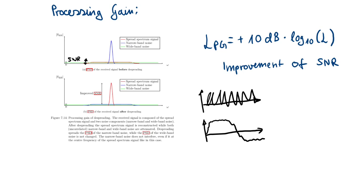Analogous to the downsampling we learned in the last chapter, we can give a formula for the processing gain, and it looks very similar to the processing gain achieved by downsampling. But here we use the spreading factor instead of the decimation factor. Like downsampling, the spreading factor is the ratio of the chipping rate to the symbol rate. The higher the spreading factor — and therefore the larger the occupied bandwidth — the higher the processing gain.